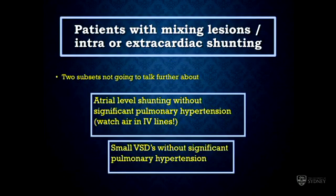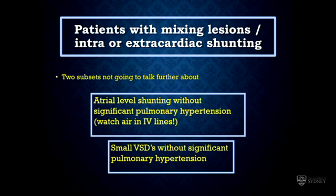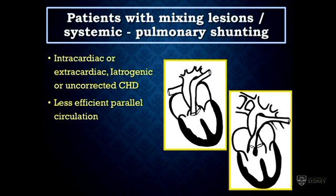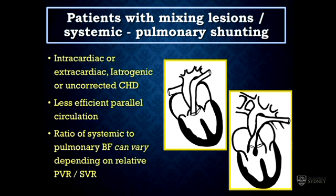Moving to the other group — patients with mixing lesions and intra- or extracardiac shunting. Patients with atrial level shunting or small VSDs without significant pulmonary hypertension tend to be quite forgiving of anesthesia, so we won't discuss them further. We're interested in the more diverse group: patients with mixing lesions and systemic-pulmonary shunting. Their shunts might be intracardiac or extracardiac, iatrogenically created to increase pulmonary flow, or it may be patients who've never had an operation — such as the tetralogy patient with just the right degree of pulmonary obstruction who has made it to adulthood. The key point is that the ratio of systemic to pulmonary blood flows is able to vary, depending on the relative vascular resistances of the pulmonary and systemic circulations.